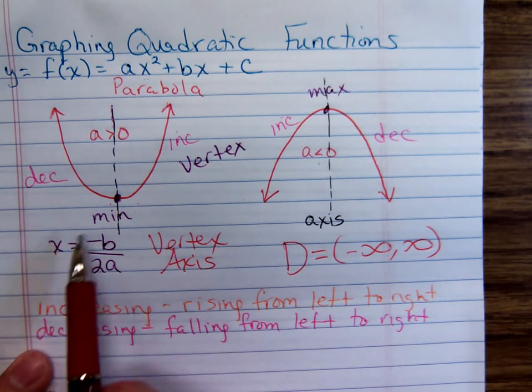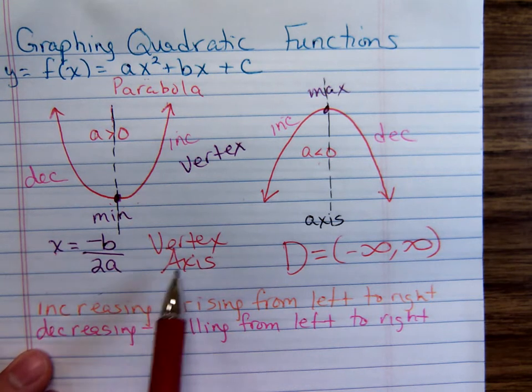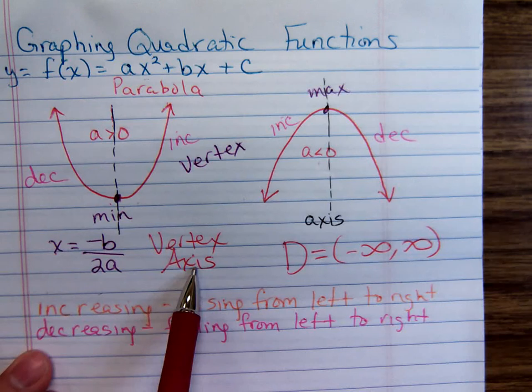Minus b over 2a gives us an equation for the x-coordinate of the vertex. This also tells us the equation for the axis.